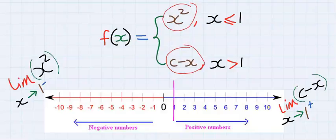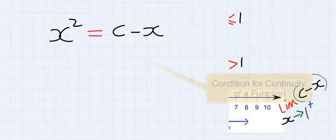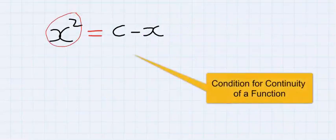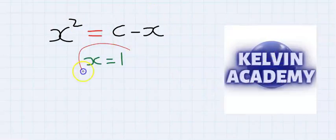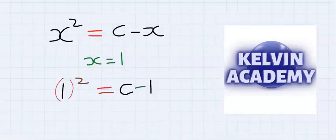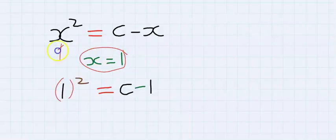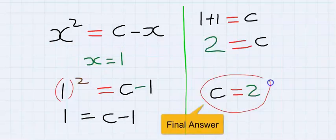Hence the left hand limit is equal to the right hand limit, and at x equal to 1 we substitute for x equal to 1 into the function. Hence we obtain that c is equal to 2.